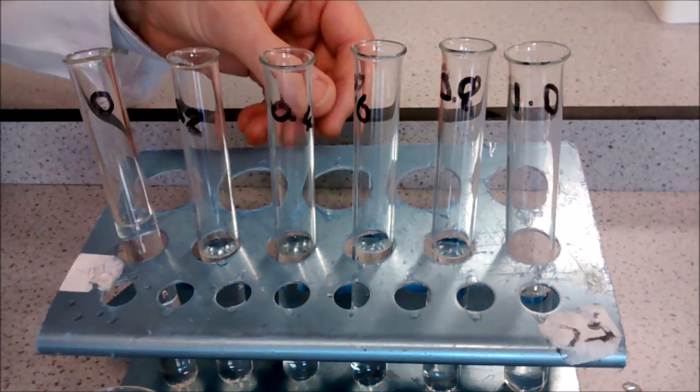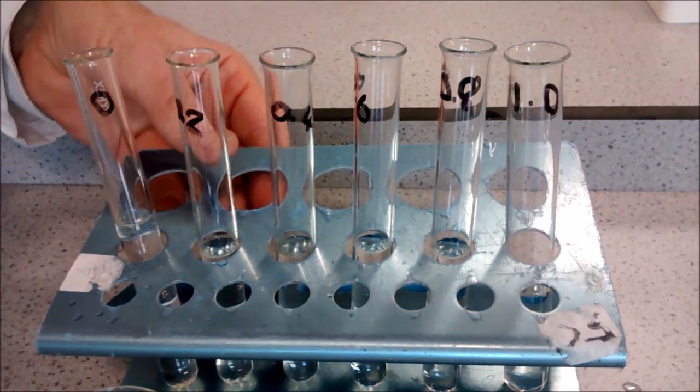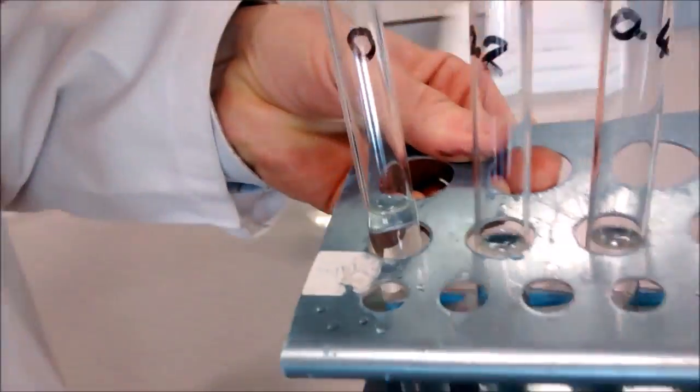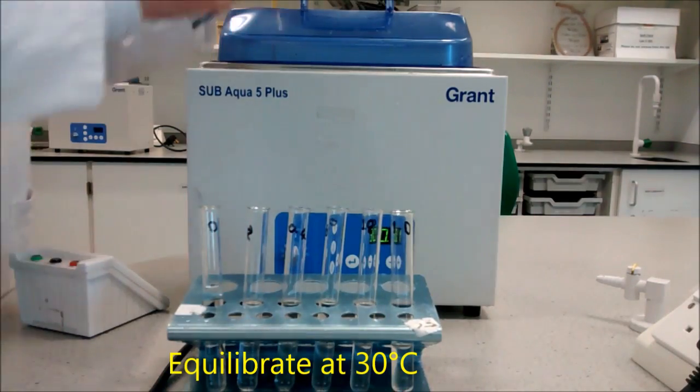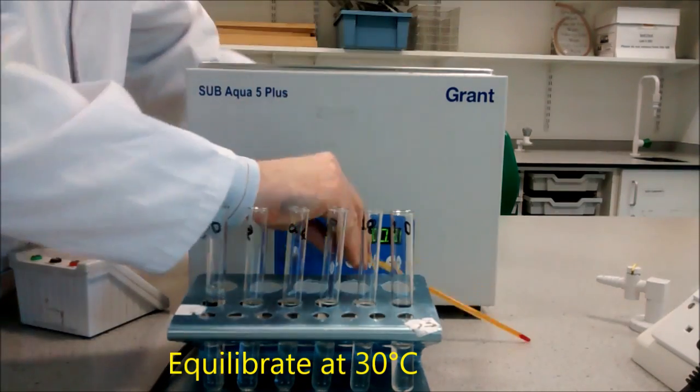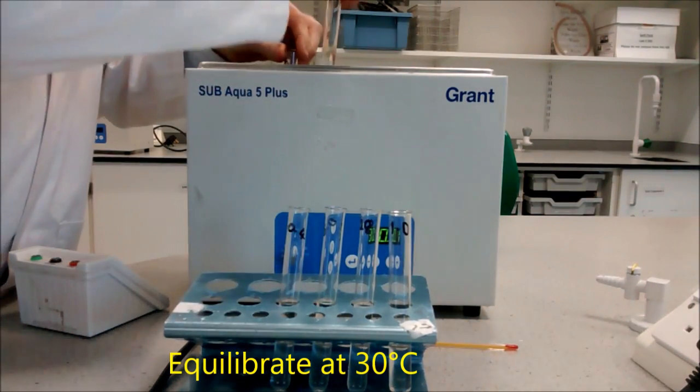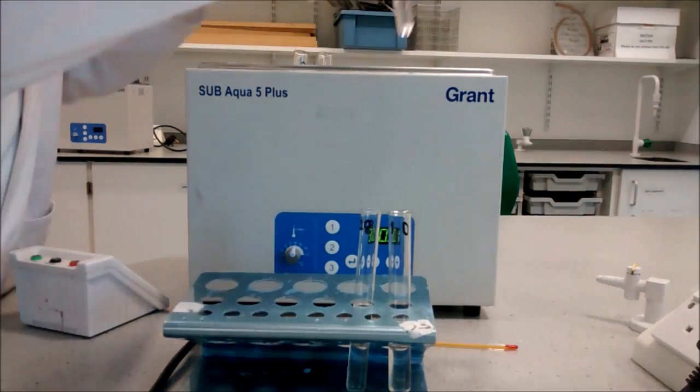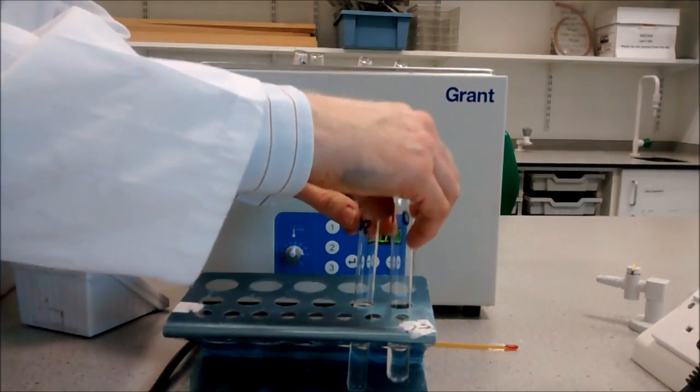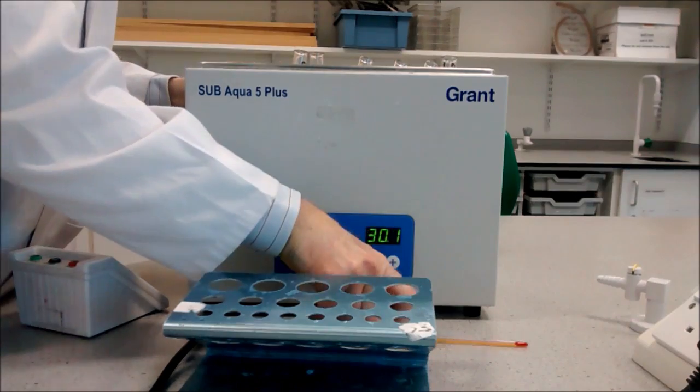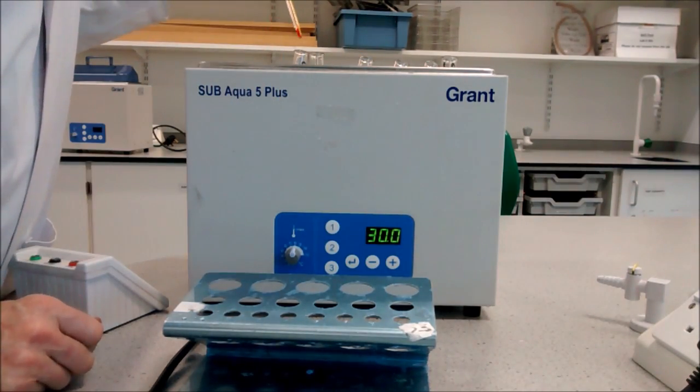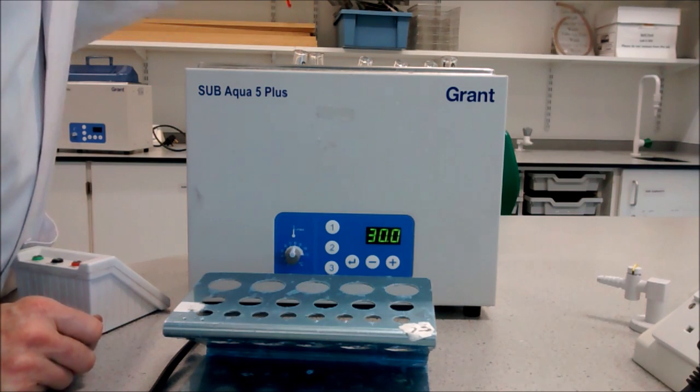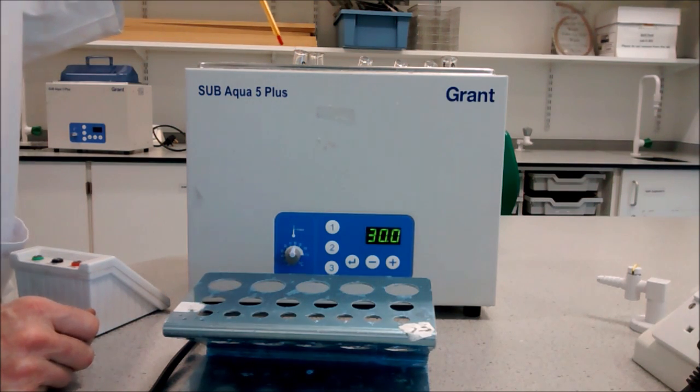These tubes should then be placed into a water bath at thirty degrees Celsius to equilibrate. Put these in: one, two, three, four, five, six. You can check the temperature of one of the tubes. When it reaches constant temperature, you'll know it's ready to use.